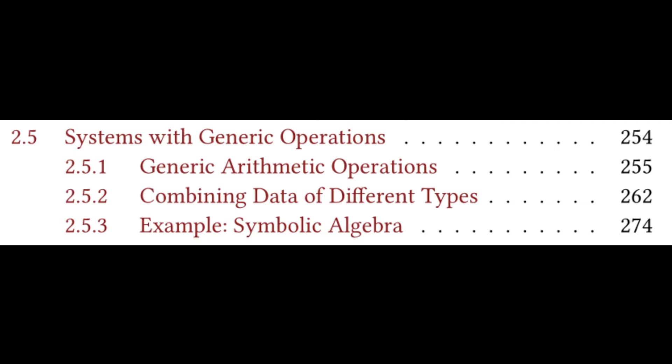The table of contents for this chapter is entitled Systems with Generic Operations, and there are three subsections: 2.5.1 Generic Arithmetic Operations, 2.5.2 Combining Data of Different Types, and 2.5.3 Example Symbolic Algebra. We will be spending most of our time on the first two subsections, where all of the exercises are from, and will briefly cover the example for the third subsection, which will be mostly left as an exercise for the watcher.